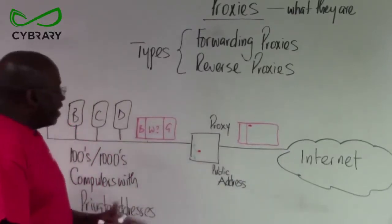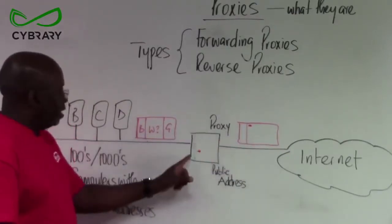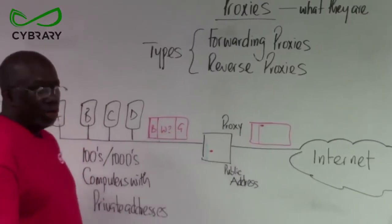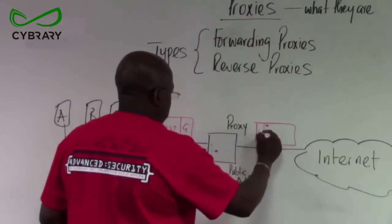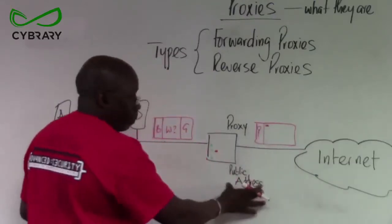So, the proxy effectively removes the address of computer B, flags the message, so to know it came from B, the proxy would put its own address, which is the public address.